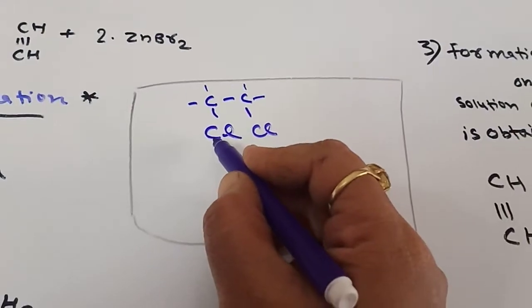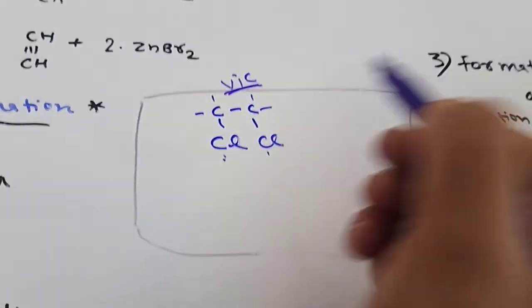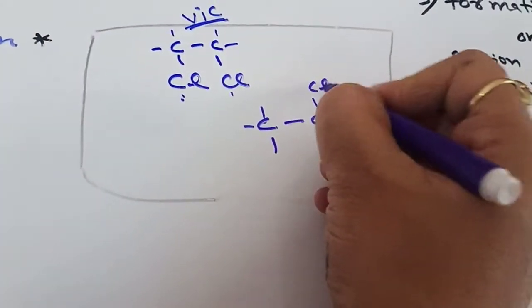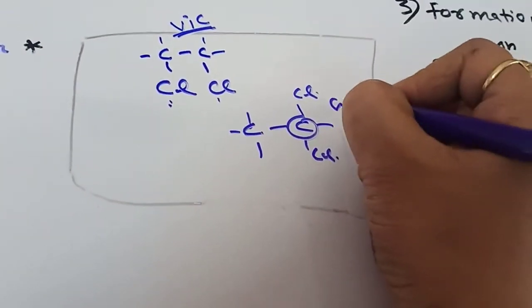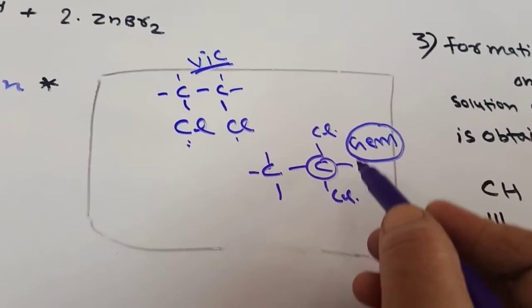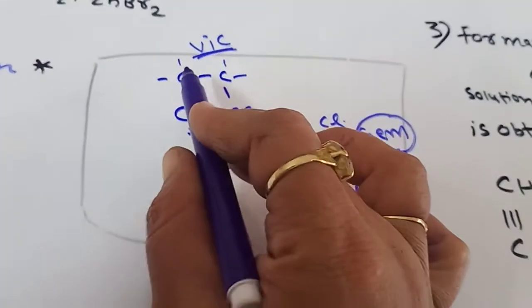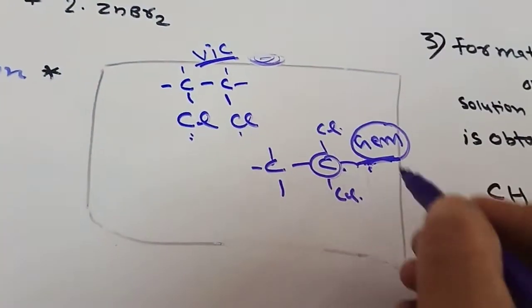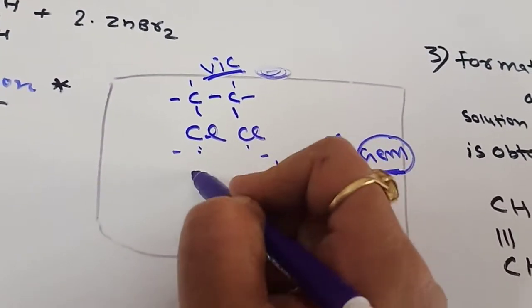If the chlorine atoms are present on the same carbon atom, it is termed a gem dihalide. To remember the difference: 'gem' joins things together — both halogens on the same carbon — while 'vic' (vicinal) separates them — halogens on adjacent carbons. So gem dihalides have both chlorine atoms on one carbon, while vicinal dihalides have the chlorine atoms on separate adjacent carbons.